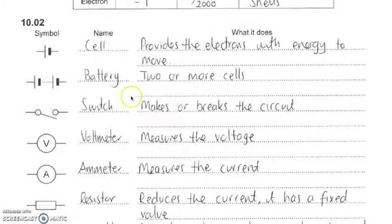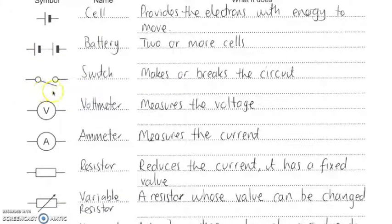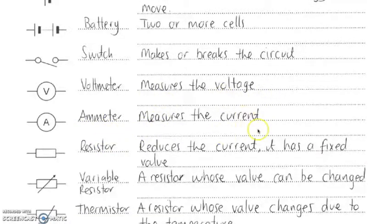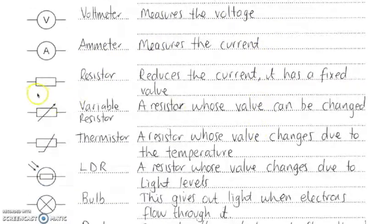A cell is what it looks like. It essentially provides the electrons with the energy to move around the circuit. A battery is made up of more than one cell. I've got a switch that looks like this. A voltmeter measures the voltage, an ammeter measures the current. I'm going to look at what those terms mean in a second.